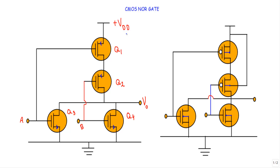In this video I will show you the construction and logical operation of the CMOS NOR gate. As this will be a NOR gate, if at least one of the inputs is at logic 1, our output will be at logic 0. This is the circuit structure of the CMOS NOR gate using the three-terminal schematic of MOSFET.